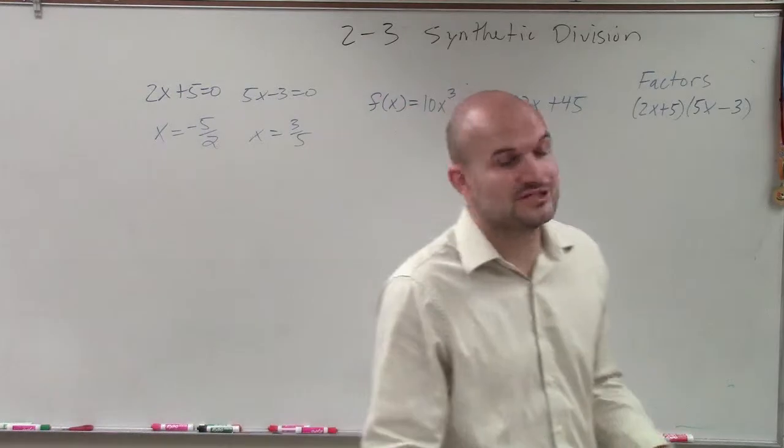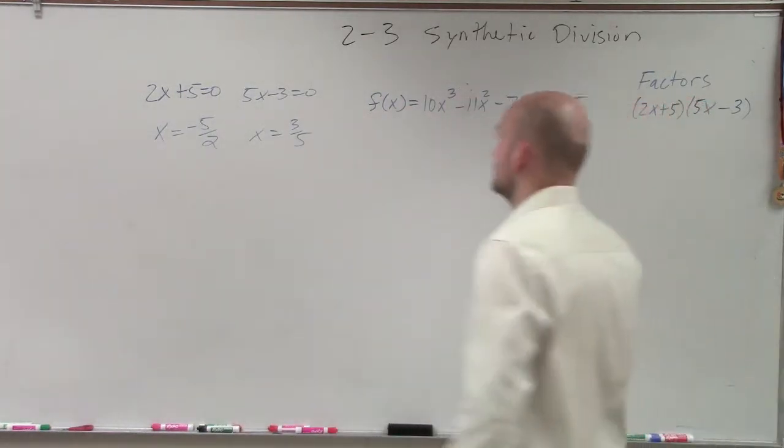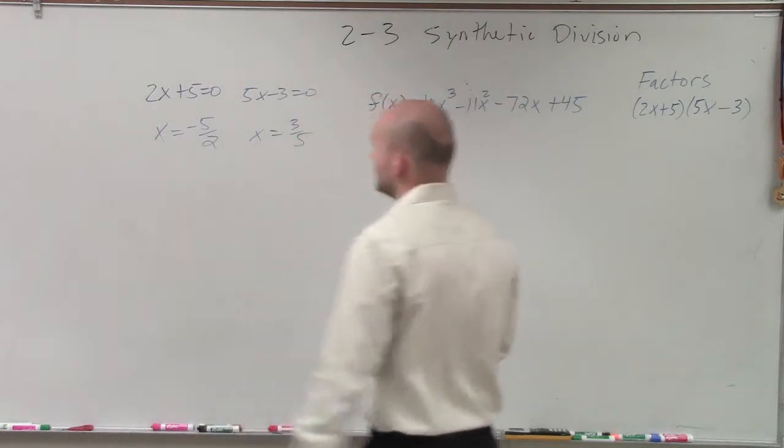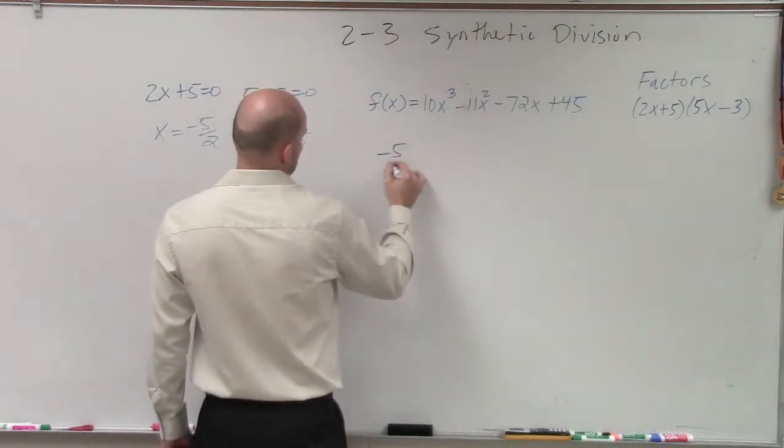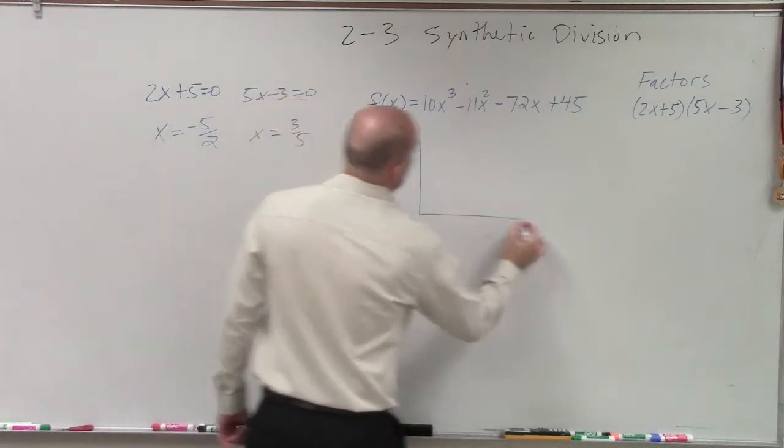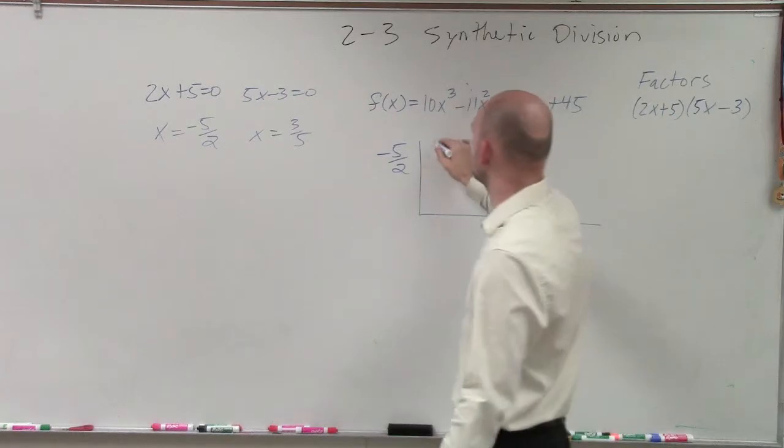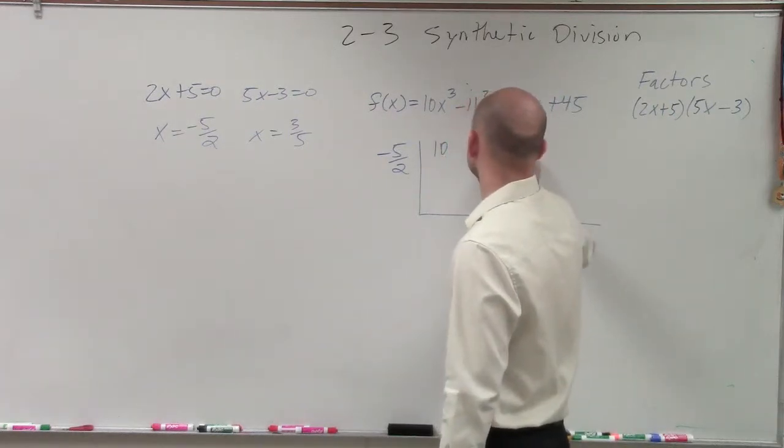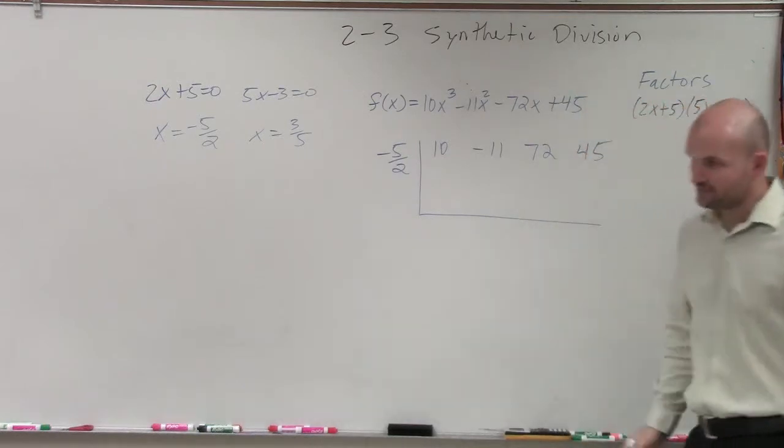Now, when applying synthetic division, it doesn't matter what zero you choose, you just need to pick one. So I'll pick the negative 5 halves. Then, when we go through this, I just take my coefficients: 10, negative 11, 72, and 45.